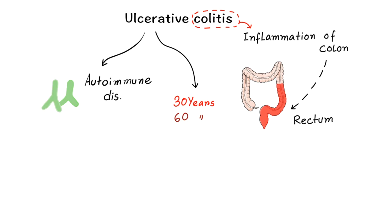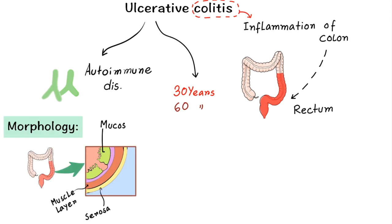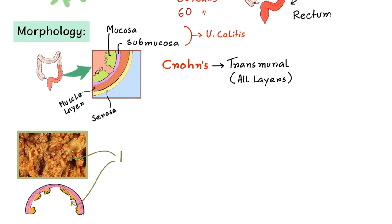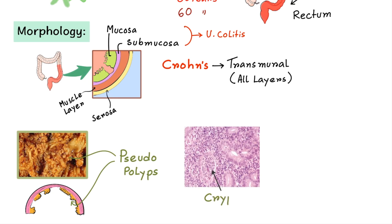The most common site involved in ulcerative colitis is the rectum. In morphology, there is mucosal and submucosal inflammation, in contrast to Crohn's disease which shows transmural inflammation affecting all layers. There is presence of friable mucosal pseudopolyps with freely hanging mesentery. In microscopic morphology, you can see cryptapsis, ulcers, and bleeding. Granulomas are normally absent in ulcerative colitis.